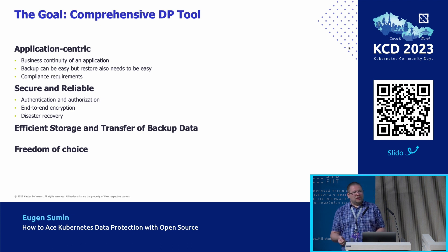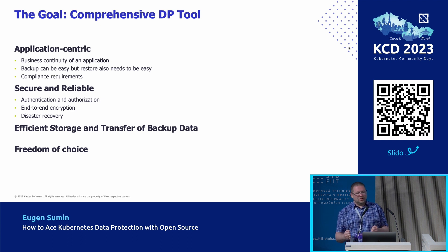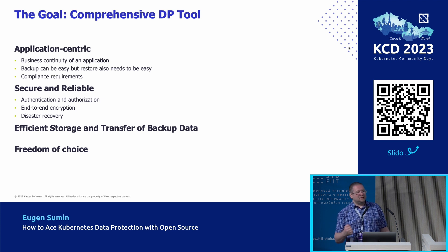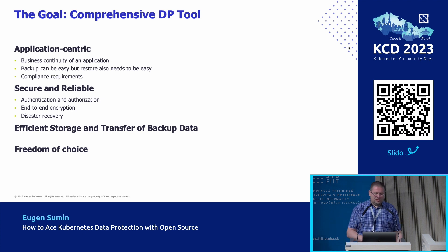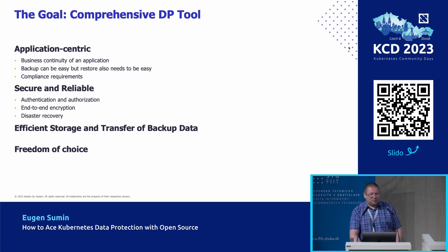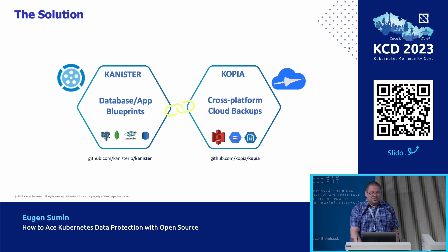The tool must provide security and reliability. It should provide authentication and authorization, because not everybody is allowed to make a snapshot or recover one. When moving snapshots outside of the Kubernetes cluster, we need to encrypt them so nobody can access our backups. Transfer efficiency matters too — uploading as little data as possible can be very important since it can be expensive. There should also be freedom of choice in backup targets.